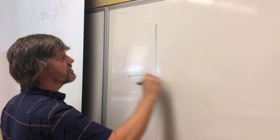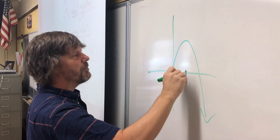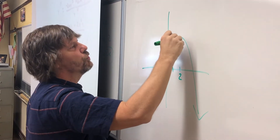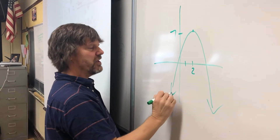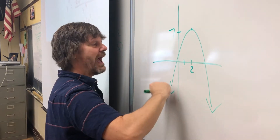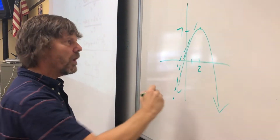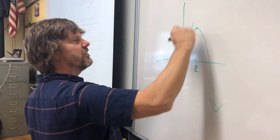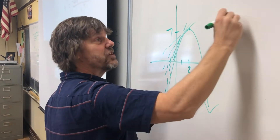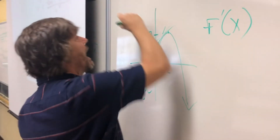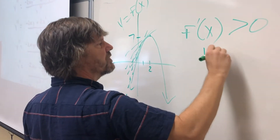When does a function increase or decrease? Well, if you have a parabola whose vertex is at the point (2, 7), say, when does the function increase? It increases as x gets bigger and y gets bigger. What happens to the slopes of the tangent lines at all the points where it's increasing? Well, these lines all have positive slopes, which means we can generalize and say: when the derivative of the function is greater than zero, your function is increasing.